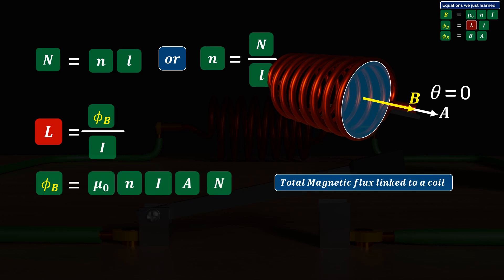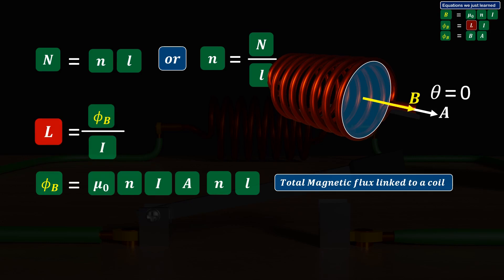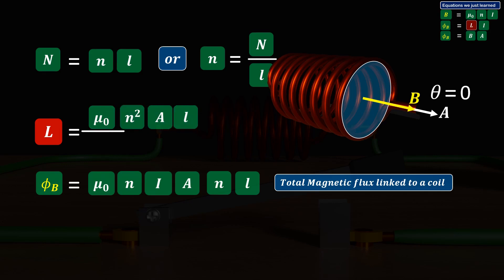To find total magnetic flux linked to a coil, we multiply number of turns capital N with the magnetic flux linked to a single turn. Since capital N equals turns density n times length L, and using the formula L equals phi-B over I, we put in the calculated value of phi-B, simplify, and I cancels out. N squared appears, giving us the equation: inductance capital L equals mu-zero times n-squared times A times L.